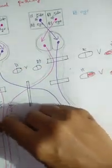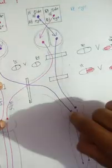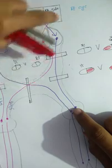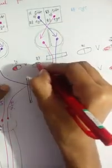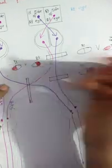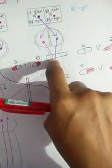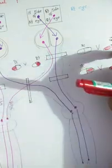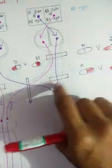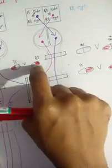The temporal part causes bitemporal hemianopia. Simply follow the fibers to see where the lesion is. Summary: ipsilateral optic nerve fiber lesion causes ipsilateral vision loss. The lateral part of the optic chiasma causes binasal hemianopia, and the medial part causes bitemporal hemianopia.